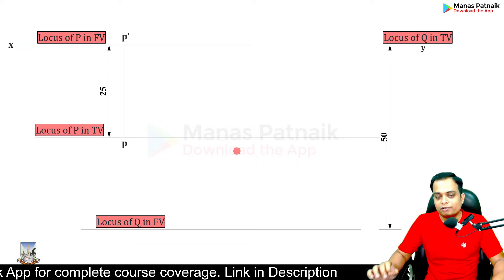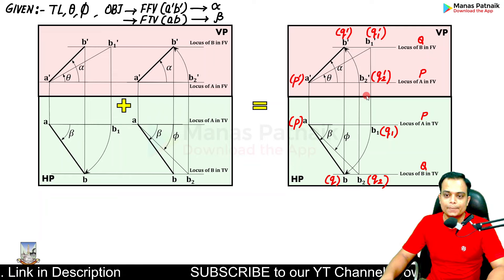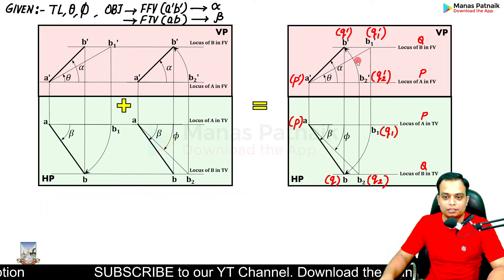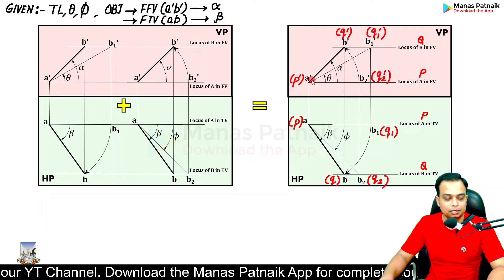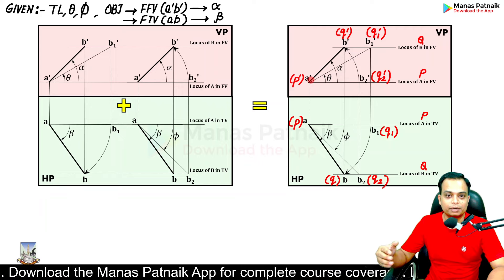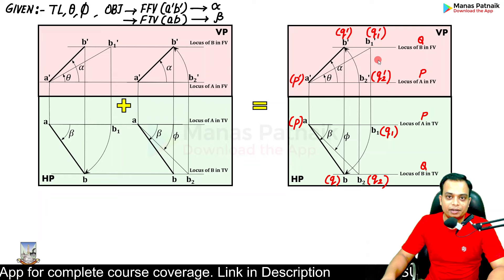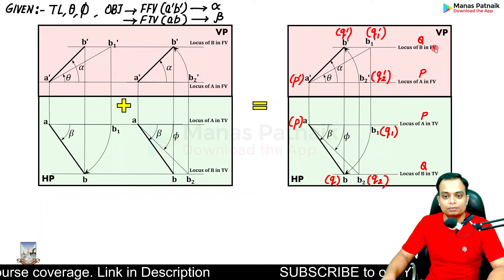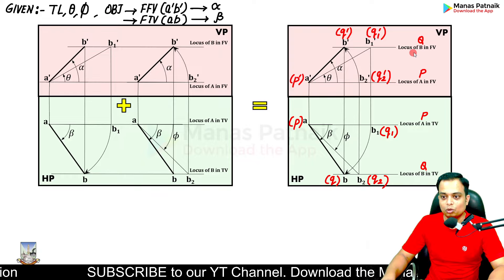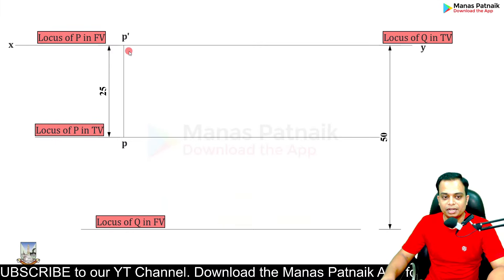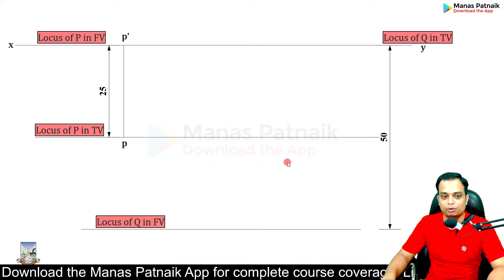Now let's find the true length and theta. The true length is 70 millimeters. What you do is take P-dash as the center and cut an arc of radius 70 millimeters on the locus of Q in front view. With P-dash as center, draw an arc of 70 mm onto the locus of Q in front view.